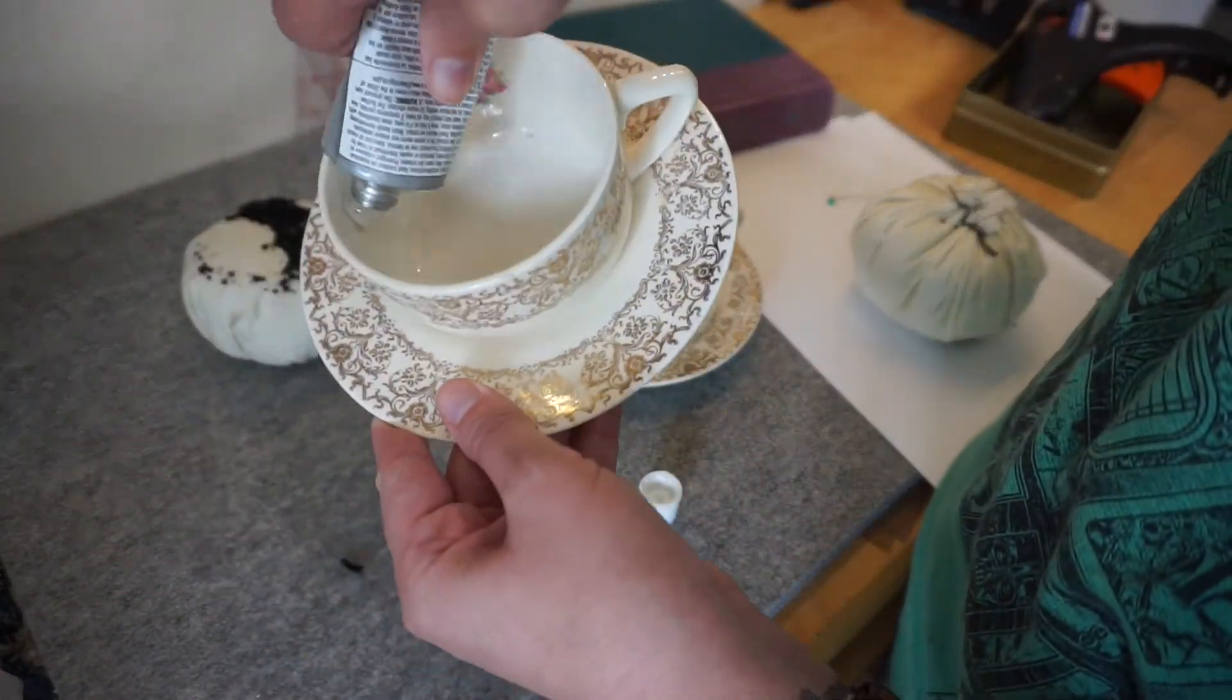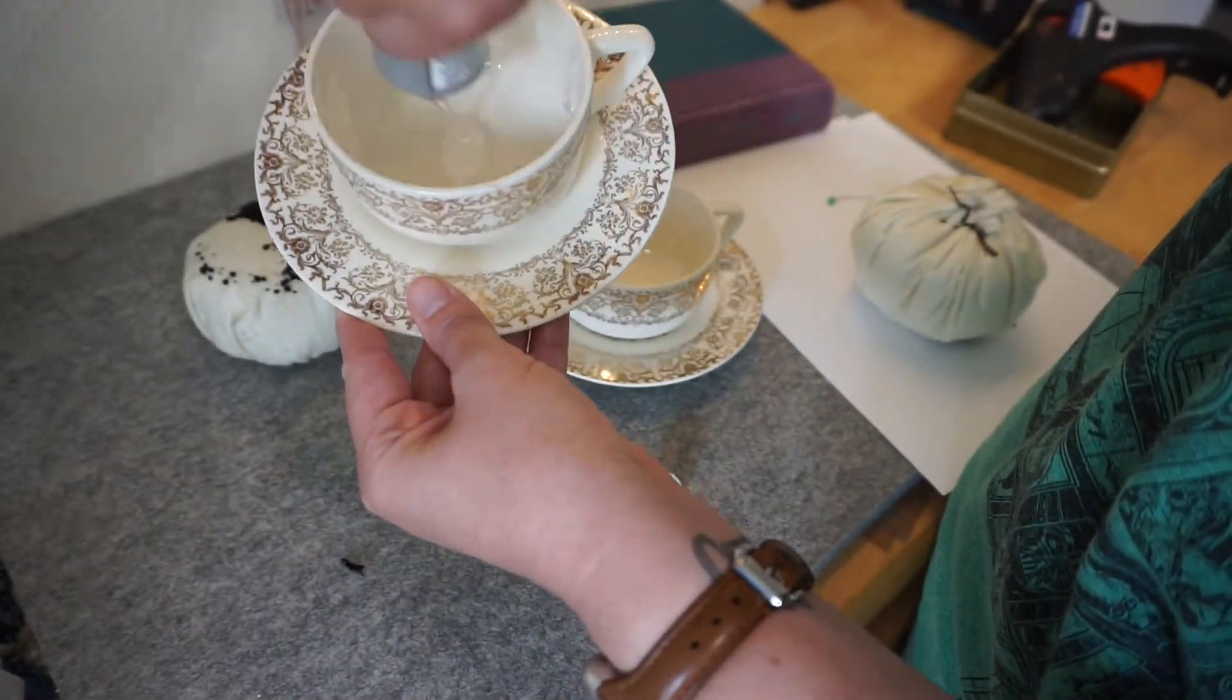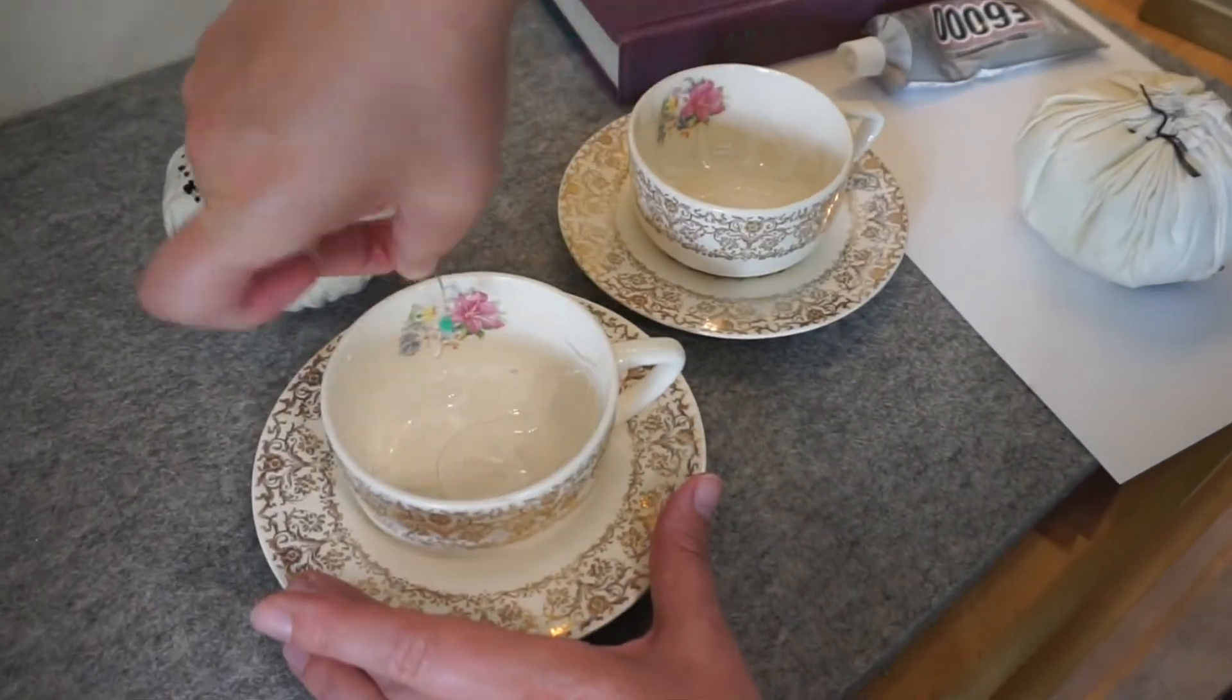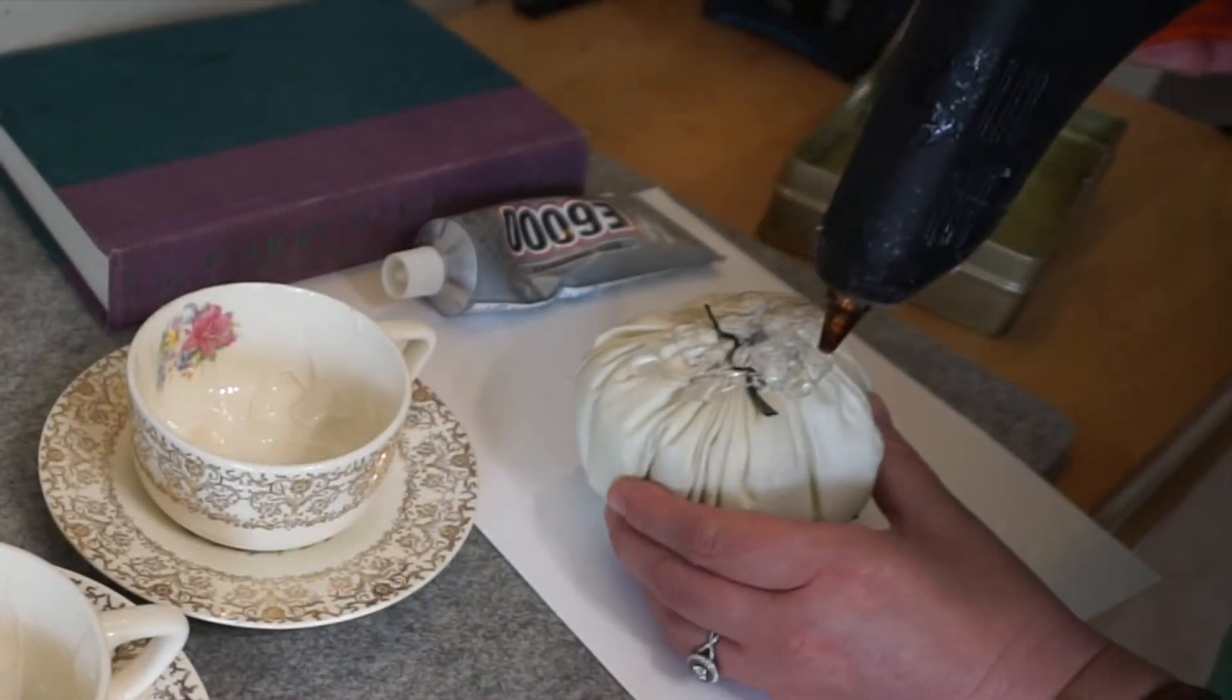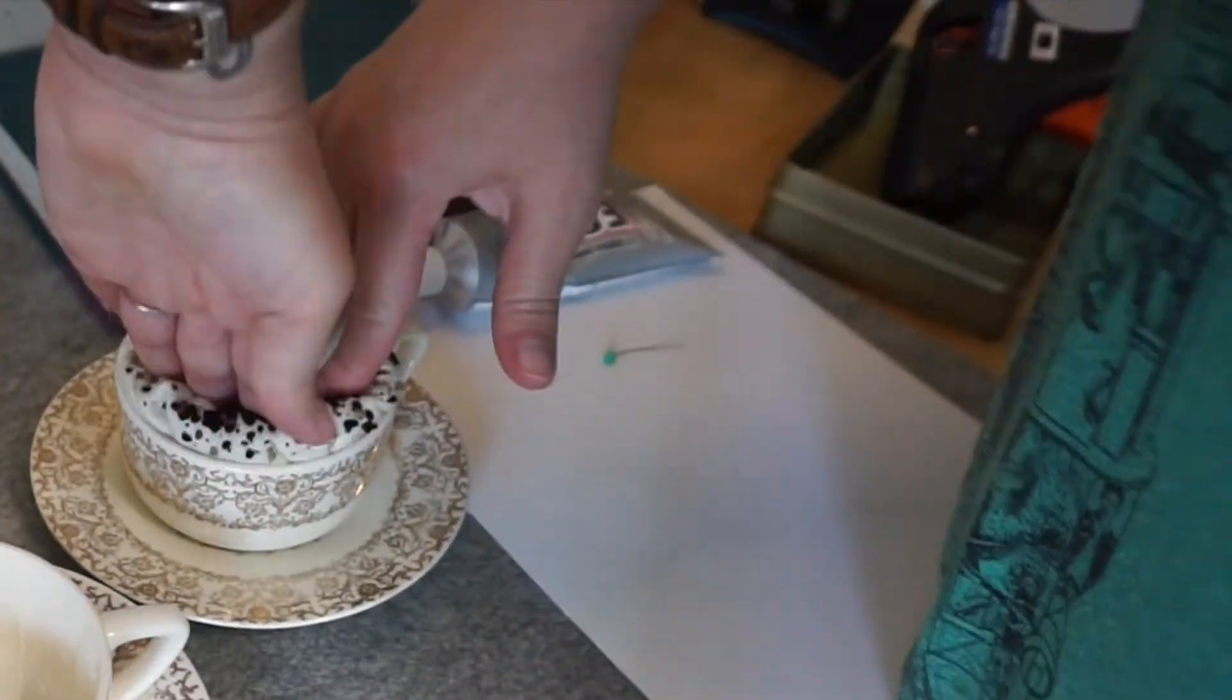Next, I took my E6000 and I put a glob inside the center and around the edges of my cup, and I spread it around a little bit. Then I took my pincushion and I added some hot glue and I pressed it into the teacup. Make sure that your Grim is facing the right way because the glue holds really good.